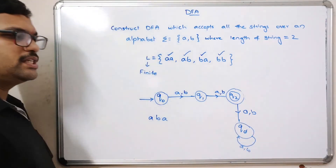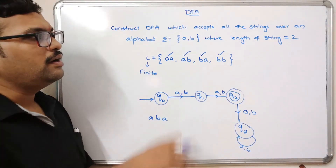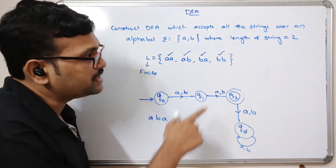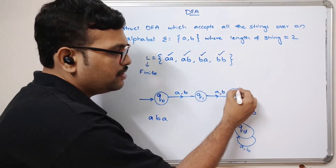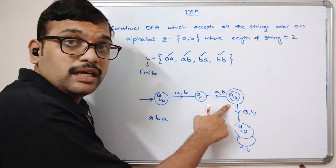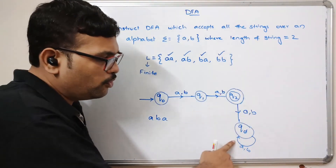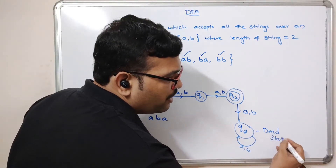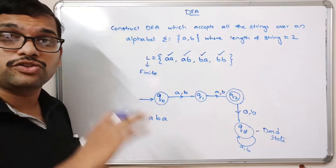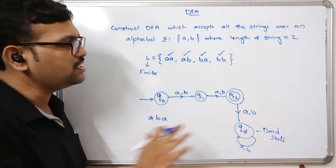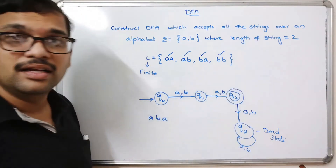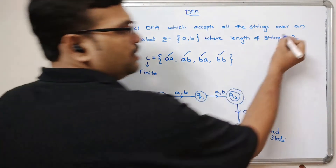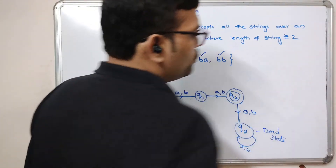This completes the DFA for length exactly two. Strings of length two land at q2 (final state). Strings longer than two move to the dead state and remain there, so they are not accepted. This is the DFA for length equal to two.